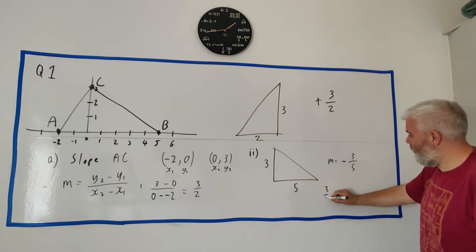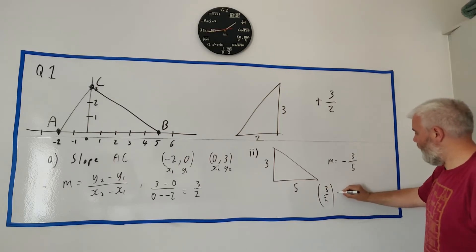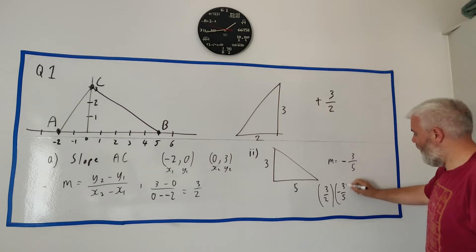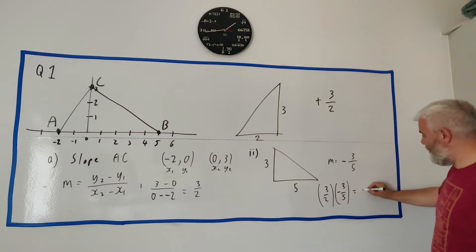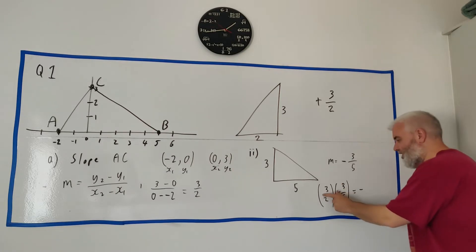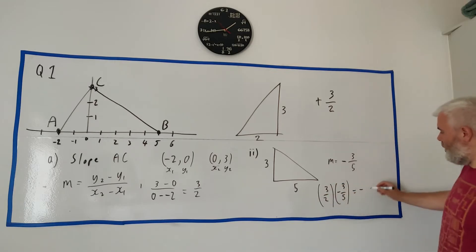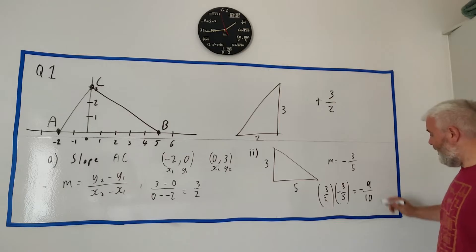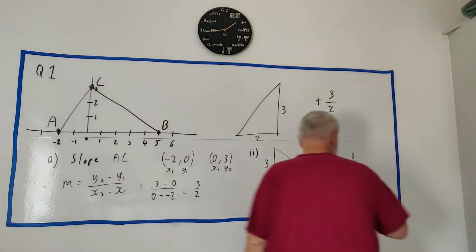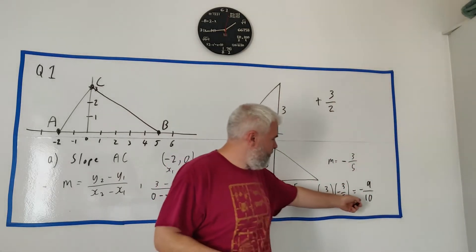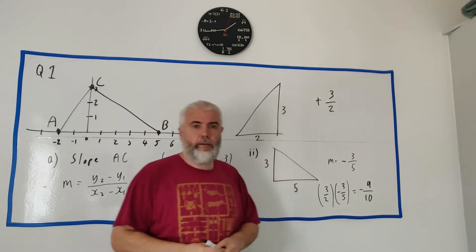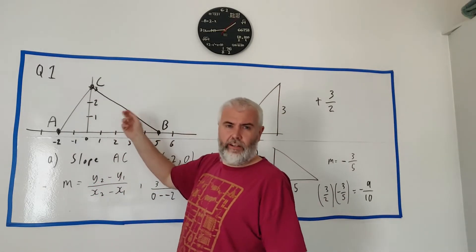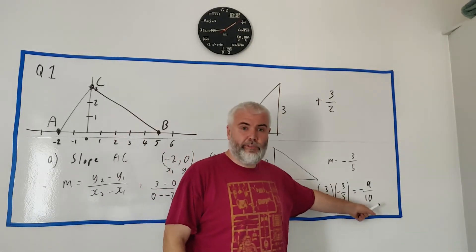Let's multiply the two slopes together: (3/2) × (-3/5) = -9/10. That is not equal to -1. It's quite close — it's -0.9 — and that's why the angle in the diagram looks nearly like a right angle, because it's nearly -1, but it's not exactly perpendicular.